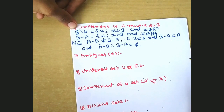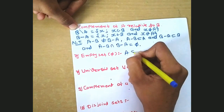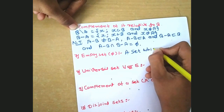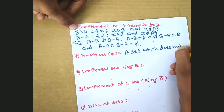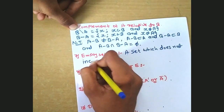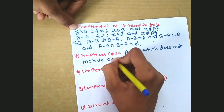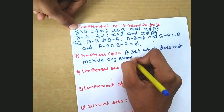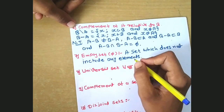Next, the null set phi: a set which does not include any elements is called the empty set.